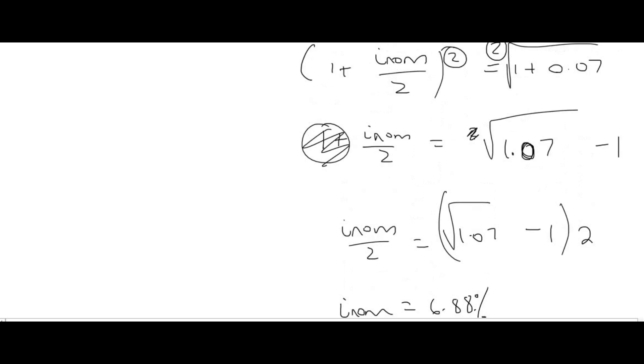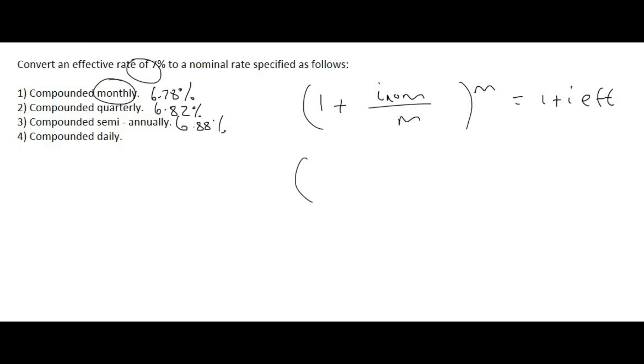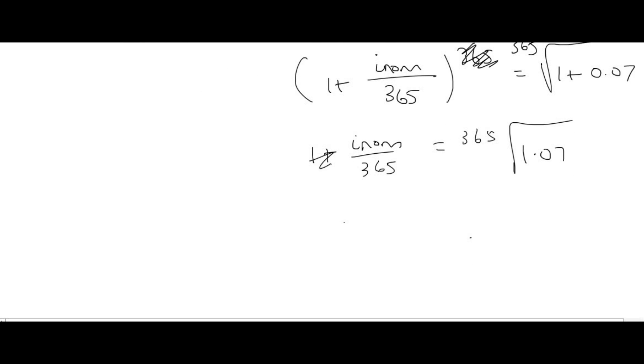And the last one will be compounded daily. So we don't know what the nominal interest rate is. Daily we'll use 365 and then 0.07. Then you can go work this out. So your first step would be to take the 365th root, just to get rid of that over there. Next step would be to take the 1 over to the right-hand side like that. And then to get INUM by itself, you multiply everything by 365. And then always remember when you're looking for a percentage, you must times by 100, so that's going to give you 6.77%.